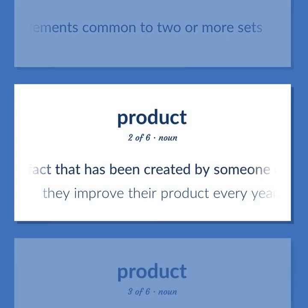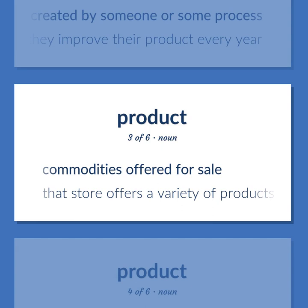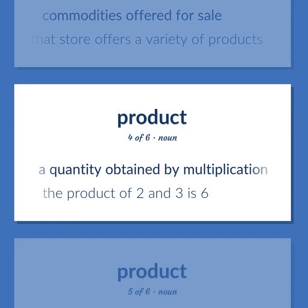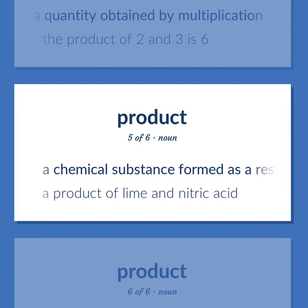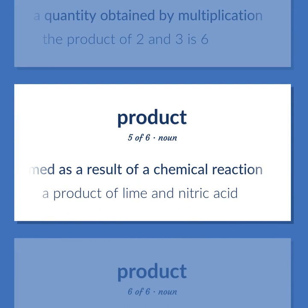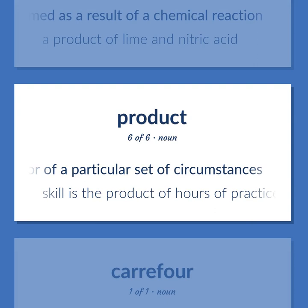Product. An artifact that has been created by someone or some process. They improve their product every year. Commodities offered for sale. That store offers a variety of products. A quantity obtained by multiplication. The product of two and three is six. A chemical substance formed as a result of a chemical reaction. A product of lime and nitric acid. A consequence of someone's efforts or of a particular set of circumstances. Skill is the product of hours of practice.